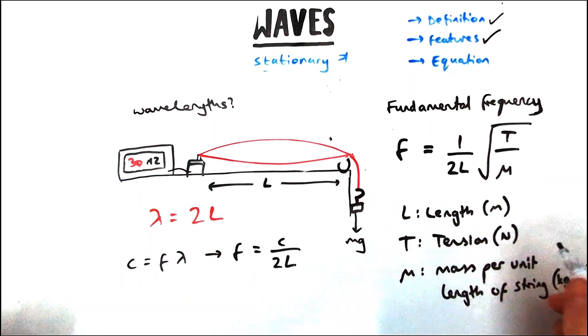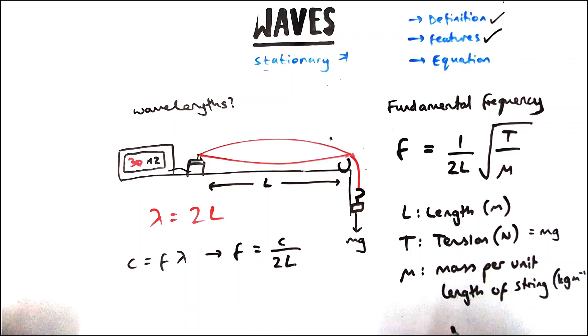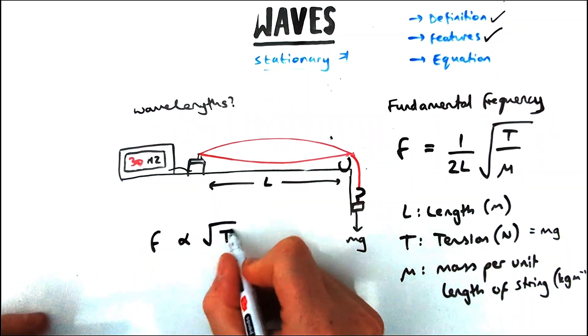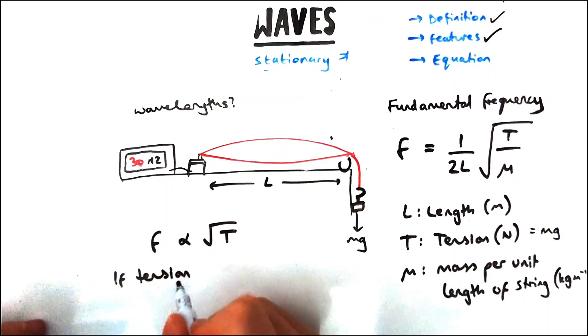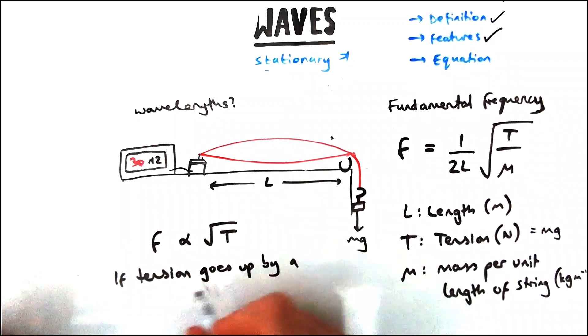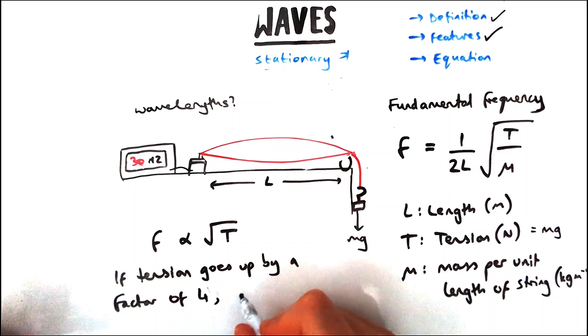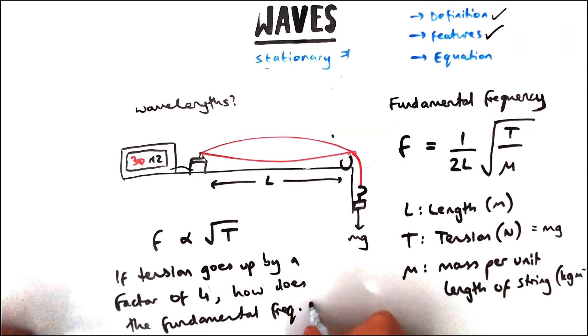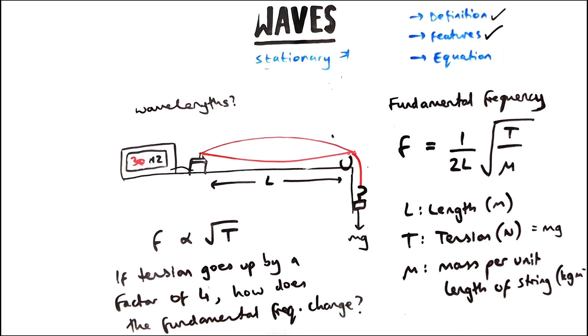It's worth using this equation to be able to work out what the relationships are between these factors. You could be asked to plug numbers in to make sure you know how to do that, but examiners love asking with this kind of equation: well, if one thing's changed, how do the other things change? So let's say the tension goes up by a factor of four. How would the fundamental frequency change? Well, if I put this up by a factor of four, it's inside a square root, so to find out how much the frequency changes, I just do square root of four, which means the frequency doubles.